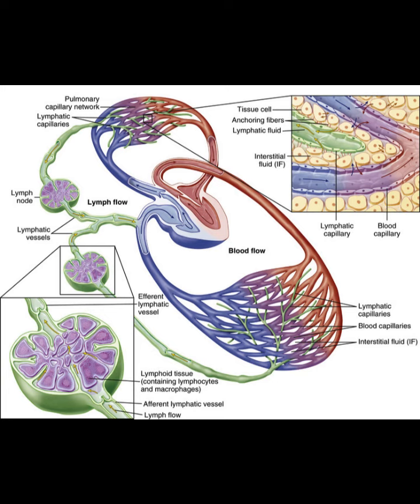Lymph nodes contain lymphatic tissue that destroys pathogens and filters waste — this is very important. The superficial lymph nodes are found in massive numbers in the groin, called inguinal nodes; in the armpit, called axillary nodes; and in the neck, called cervical nodes.